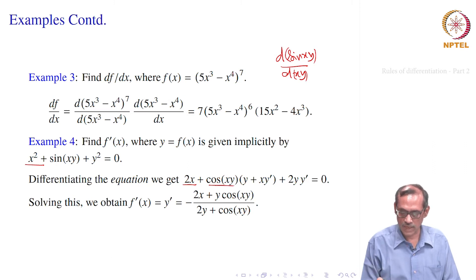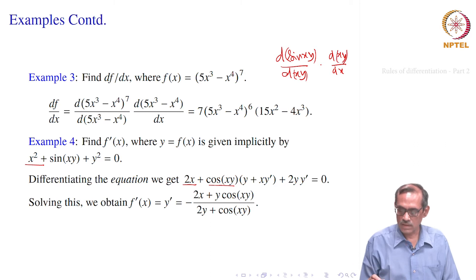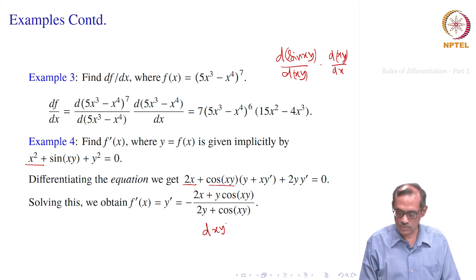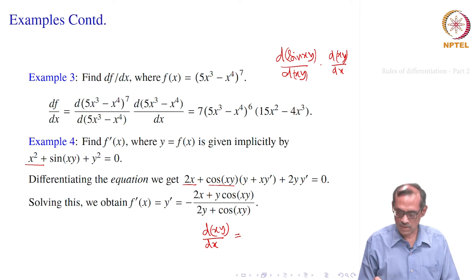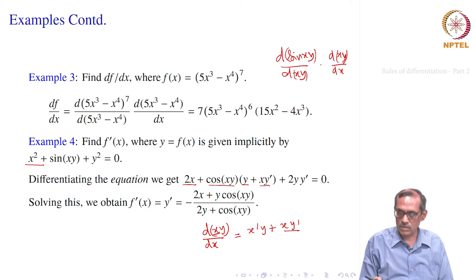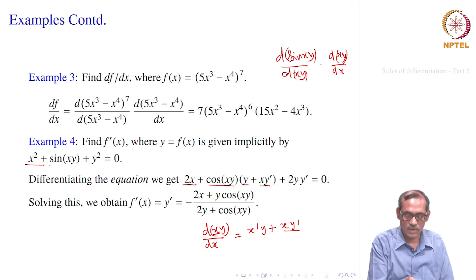That gives cos(xy) multiplied by d(xy)/dx. Now what is d(xy)/dx? By the multiplication formula, d of f·g equals f′g plus fg′. So x′·y plus x·y′. Now x′ with respect to x gives 1, so that is y plus x·y′. That is how you get the derivative of sin(xy).